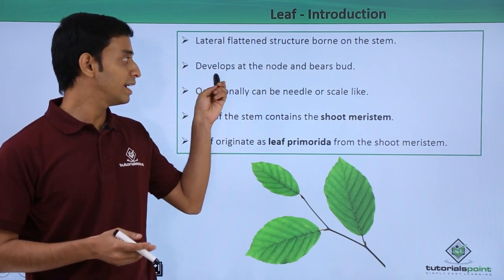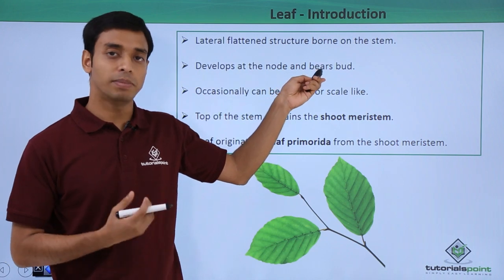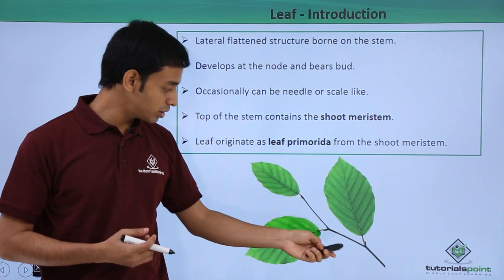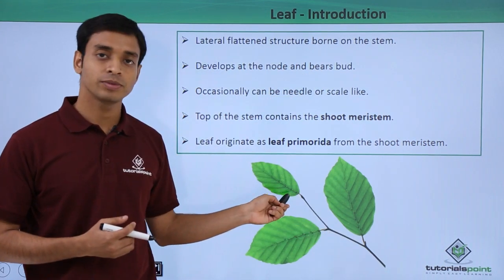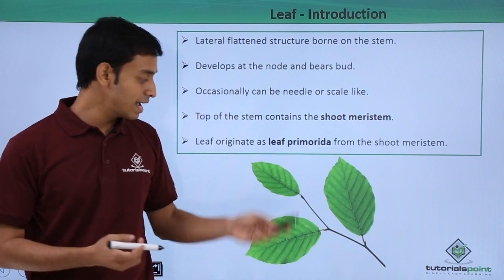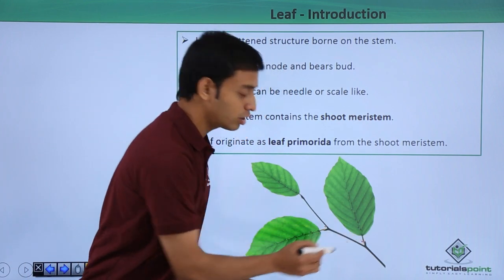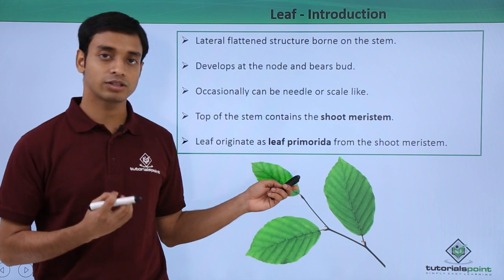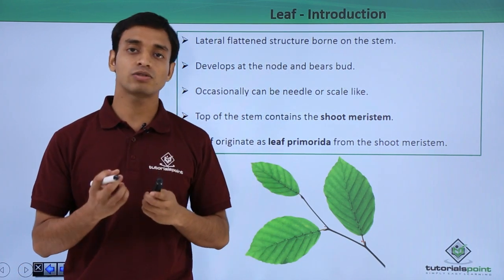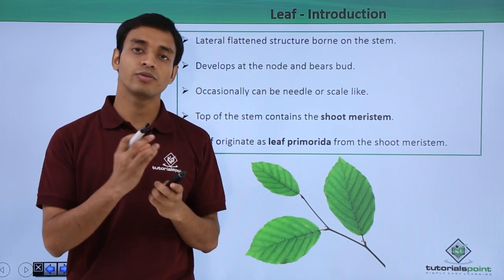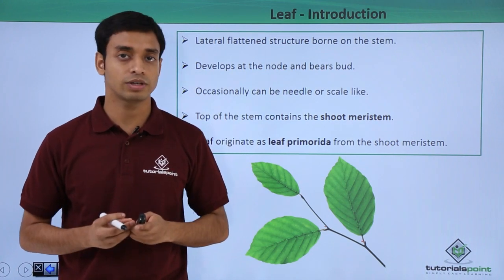Leaves develop at the nodes and they bear the buds. As you can see over here, at each node of the stem the leaves arise, and at the base of all these structures they have bud-like structures. We know what buds are — these are condensed structures which can later on give rise to various other structures like flowers, fruits, etc.